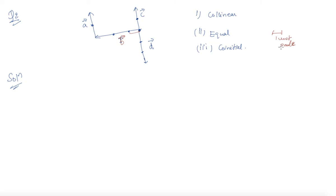Okay, so I need to specify out of these which are collinear, equal, and co-initial vectors. So to specify collinear vectors - collinear vectors means students which are in a straight line, which are A, C, and D vectors.